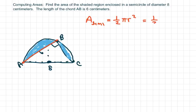So in this case that would be one half. We have, what's r? r is 4, so it's going to be 16π, which equals 8π centimeters squared.